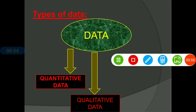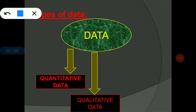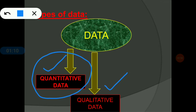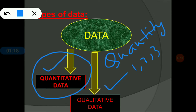Here we can see the types of data. Data is of two types: the first one is quantitative data and the second one is qualitative data. From the name, we can say quantitative data indicates the quantity of the data, like 1, 2, 3, etc. Qualitative data indicates the quality of the data.